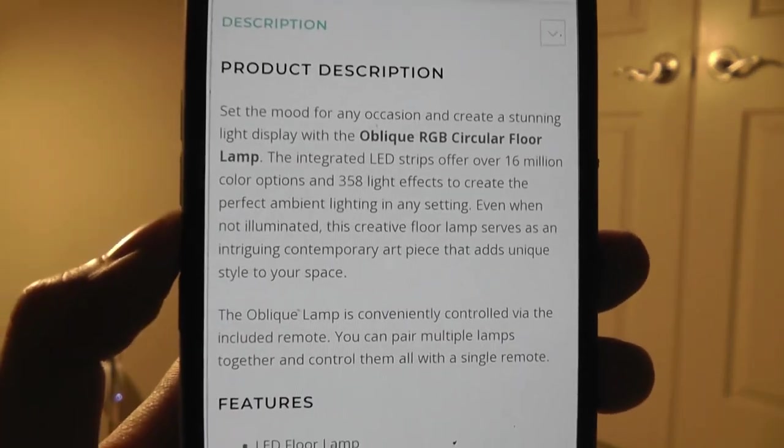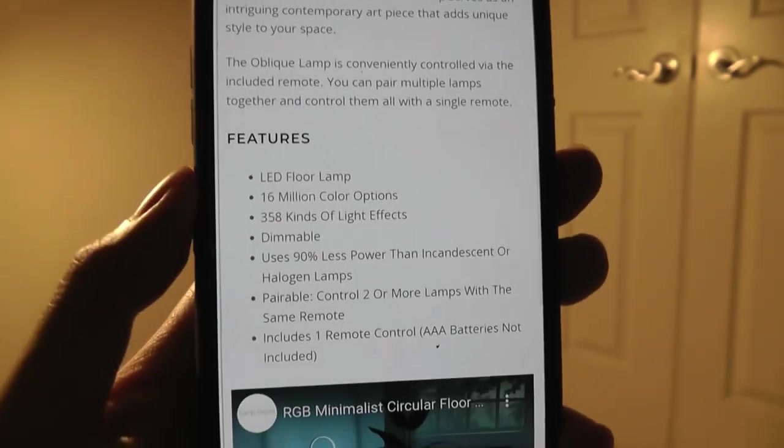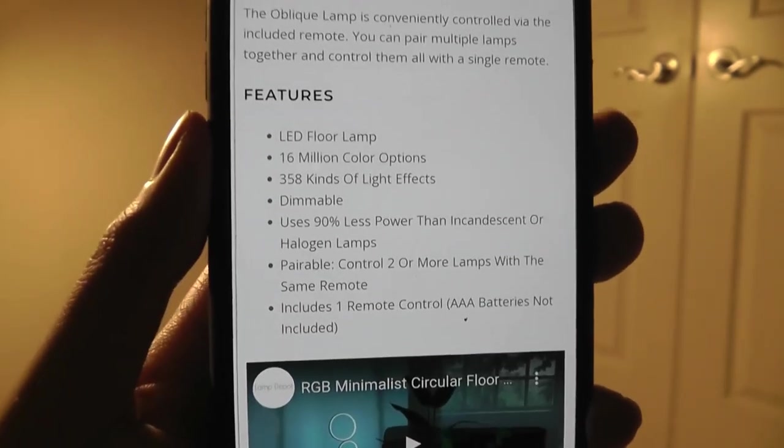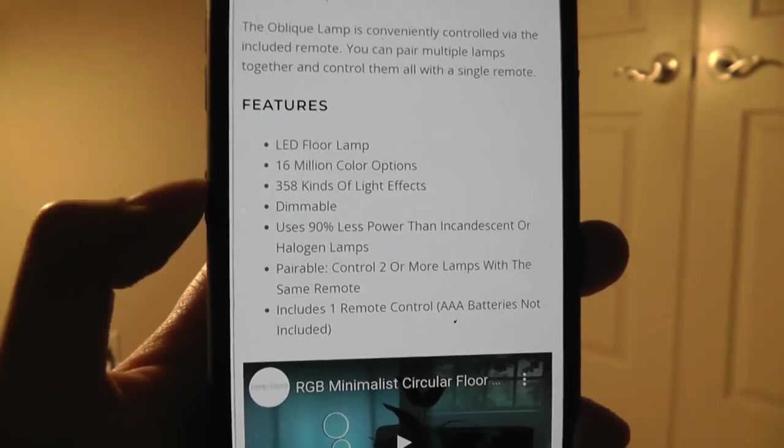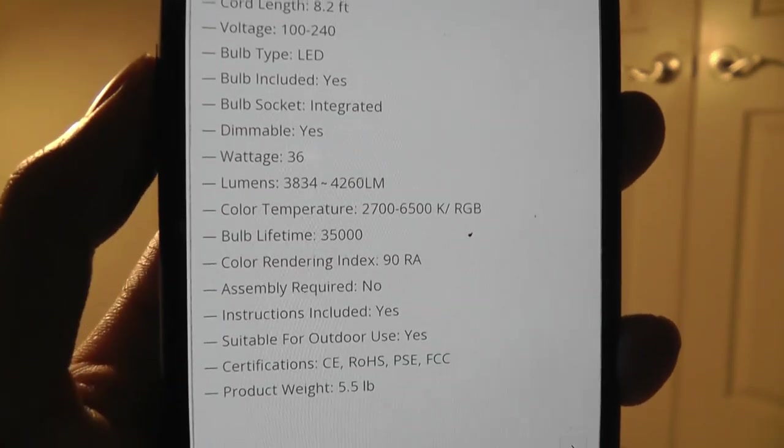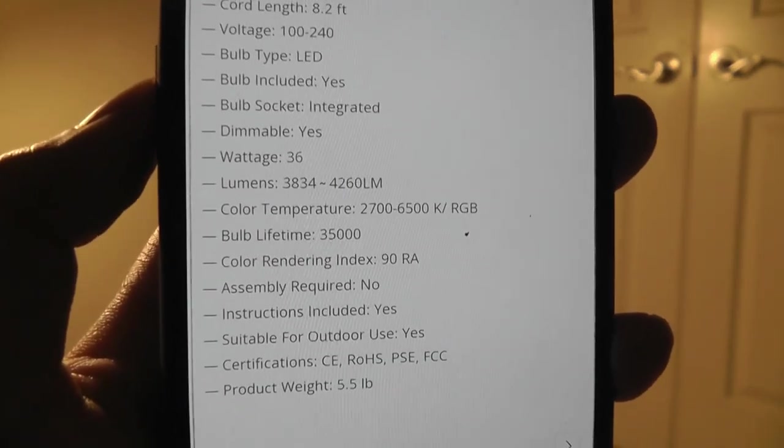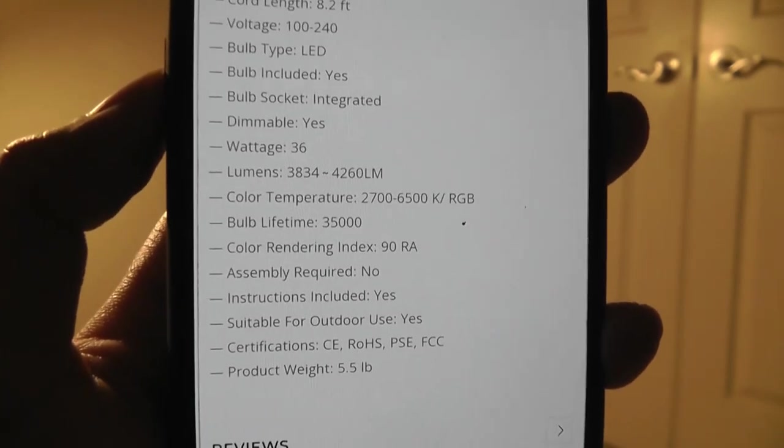So anyways, 358 different light effects to try out, controlled using a remote. So this one does not connect using a smartphone app, it doesn't have Wi-Fi or Bluetooth. So that's one thing to keep in mind. LEDs, which are pretty energy efficient. Lumens, you're talking about a variety here from 3834 to 4260, depending on the color that you're selecting. Bright enough for what it is.